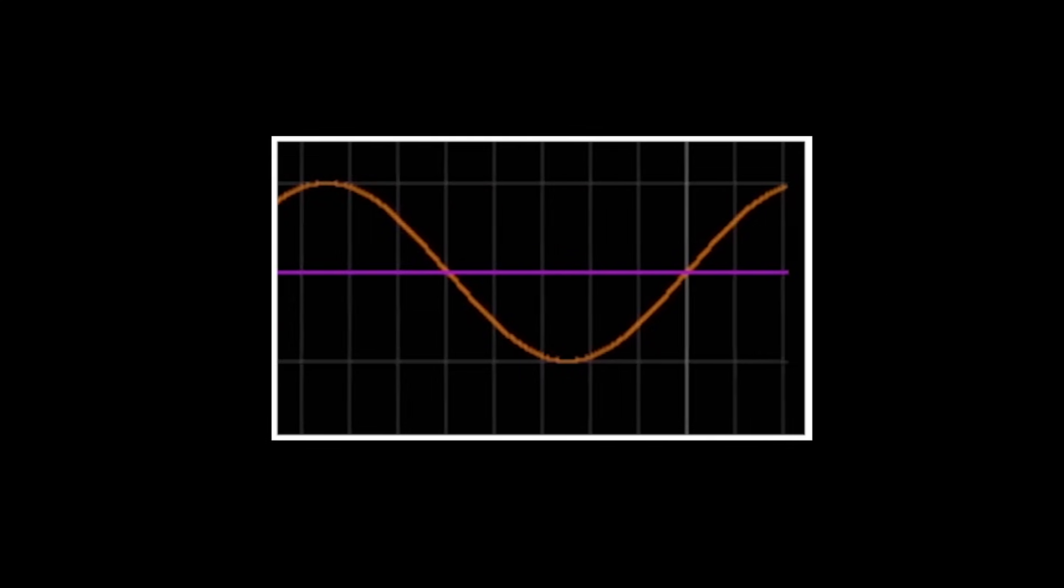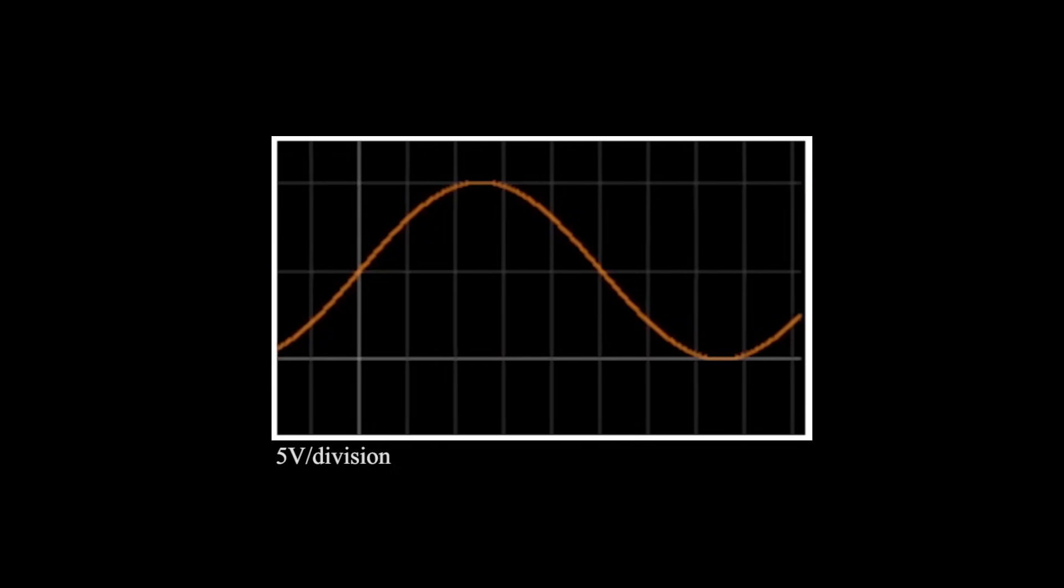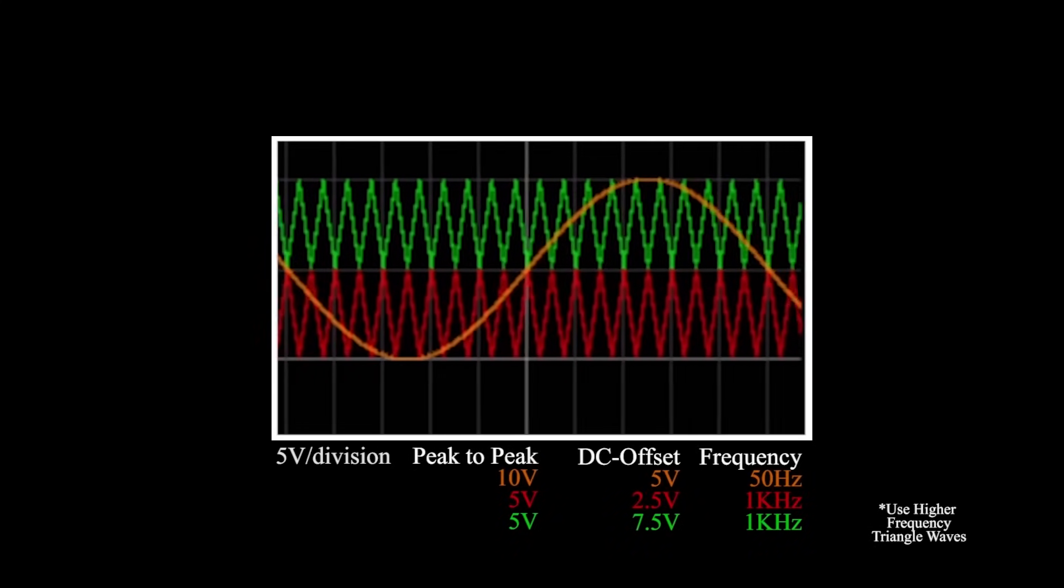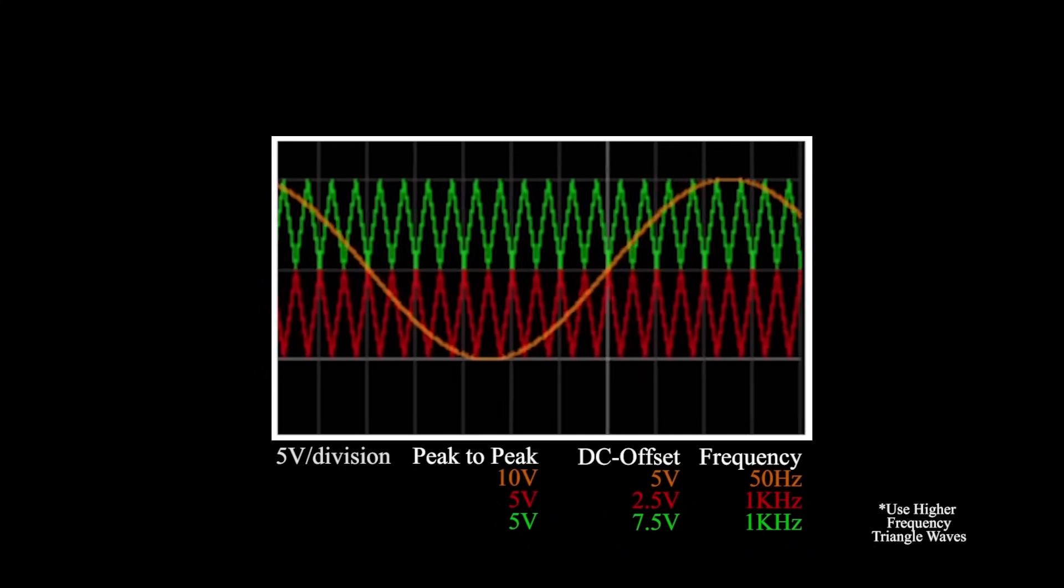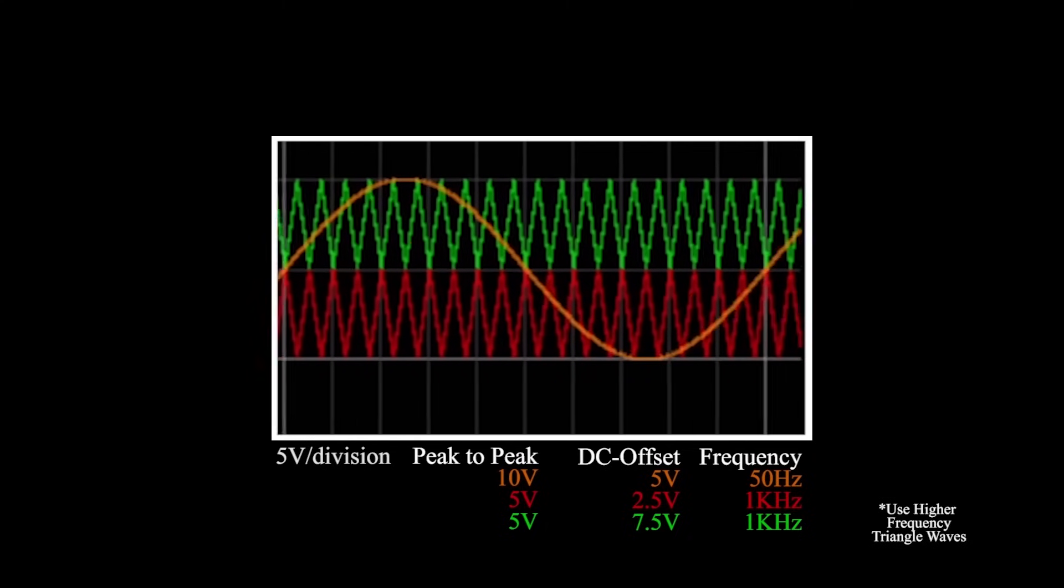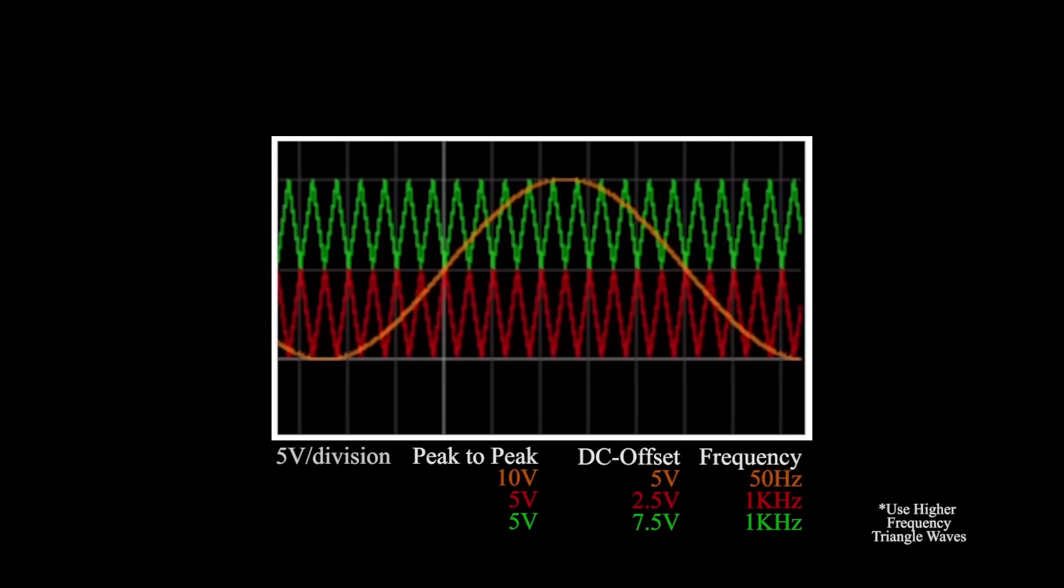Now, we will use a 5V 50Hz sine wave with 5V of DC offset, and 2 triangle waves of 2.5V and 1KHz, with an offset of 2.5 and 7.5V respectively. Thus modulating the positive half and negative half of the sine wave with different triangle waves.